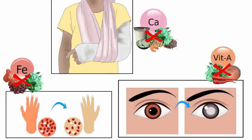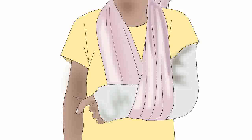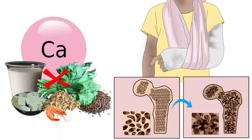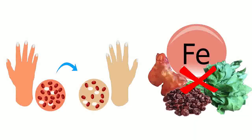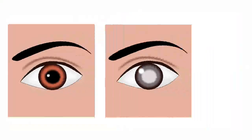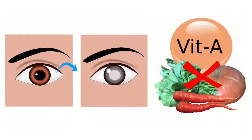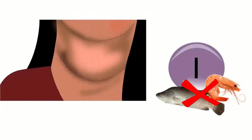The sick person then shows a specific sign of deficiency. For example: bone thinning and increased risk of fractures are signs of calcium deficiency; anemia is a sign of iron deficiency; night blindness is a sign of vitamin A deficiency; and hypothyroidism is a sign of iodine deficiency.